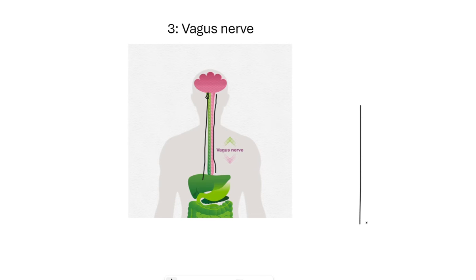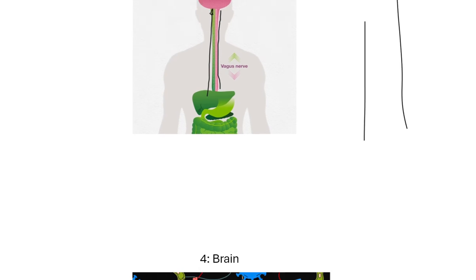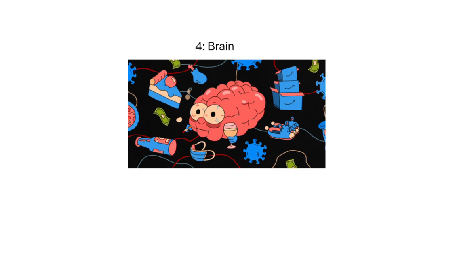The fourth component is the brain. The key essence of the gut-brain axis topic is to look at how the bi-directional communication occurs between the gut and the brain — how the brain can affect gut health and how gut health can affect the brain.